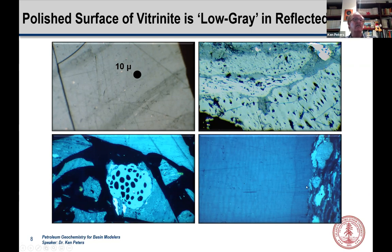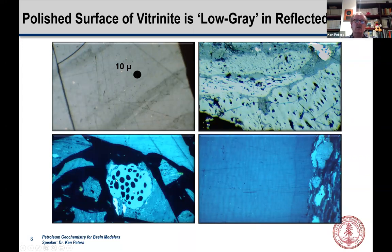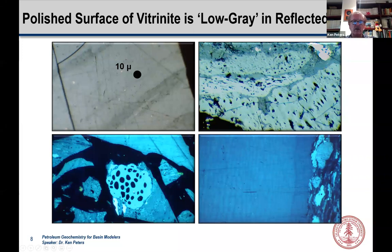Here's another nice large piece of vitrinite showing cellular structure in the woody material. In a kerogen preparation, you'll also find inertinite, fungal hyphae, and fractured vitrinite-like materials — some of which may actually be solid bitumen. You've got to be careful about that. So it's not necessarily straightforward to select vitrinite in some cases, which is why it's important to look at the histogram.